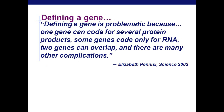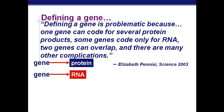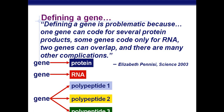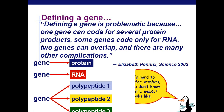Defining a gene is problematic because one gene could code for several protein products, some genes code only for RNA, and two genes can overlap — there are many other complications. In the 90s we thought humans had 100,000 genes. In 2000, we thought 40,000 was a good estimate. Then in 2004, 30,000. In 2006, 25,000 is our best estimate so far. Don't forget about alternative gene splicing and how it can create different forms of products from single genes.